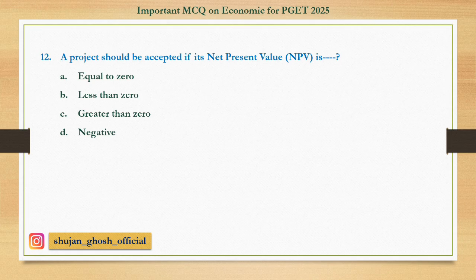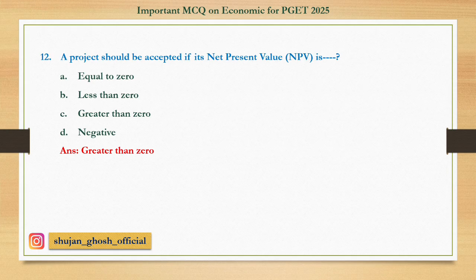Question number twelve: A project should be accepted if its NPV is — option A: equal to zero. B: less than zero. C: greater than zero. D: negative. Answer: greater than zero. The value we find by calculating NPV — if it is greater than zero, the project should be accepted.